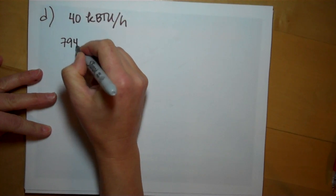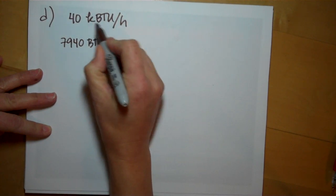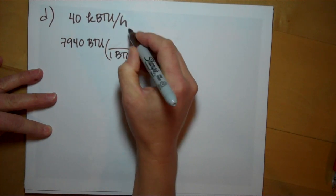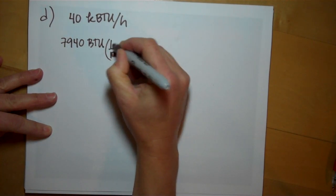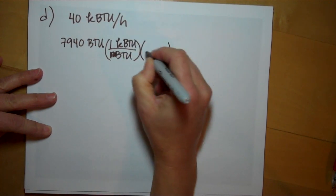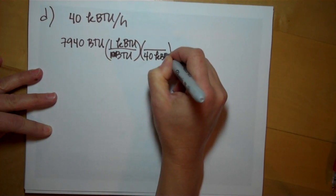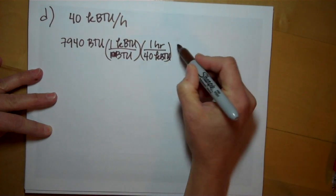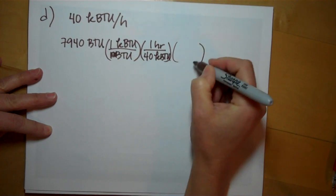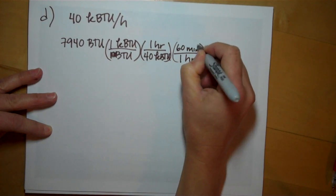You only need 7940 BTUs. And if we want to convert to kilobtus, that might make it easier. 1000 BTUs are in 1 kilobtus. And our hot water heater can produce 40 kilobtus in 1 hour. But I know it's going to be less than an hour, so let me convert this to minutes so that I don't end up with some weird hour decimal.